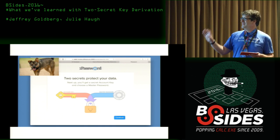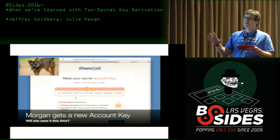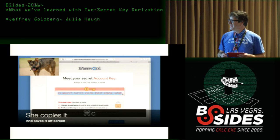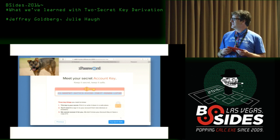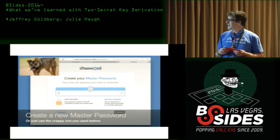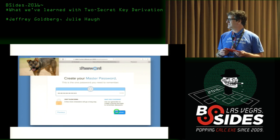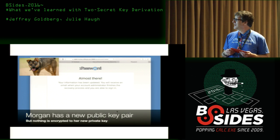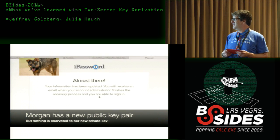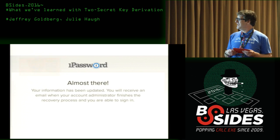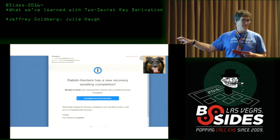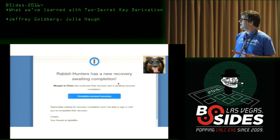Effectively, Morgan is creating a new account with her old email address and identifying information. She gets a new account key — and look, she saved it this time. She chooses a master password. Now a new public-private key pair has been generated for her.